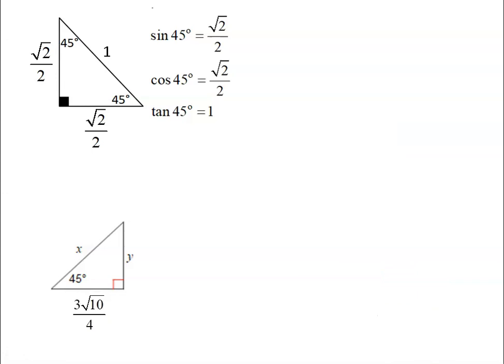And if I wanted to find y, I would do the exact same thing. But using that 45, that y is opposite, and the 3 root 10 over 4 is adjacent. So that means that I'd be using sine of 45. The exact value of sine 45 is root 2 over 2.